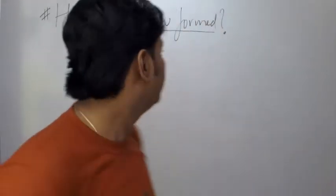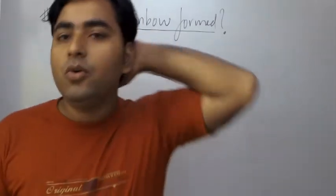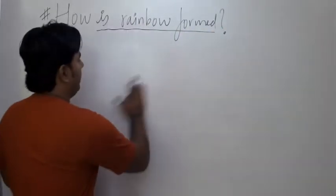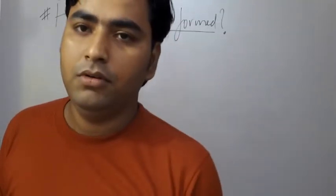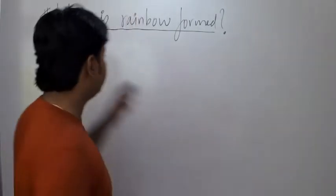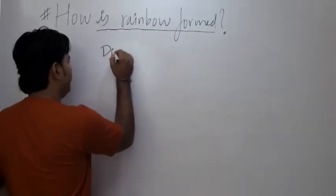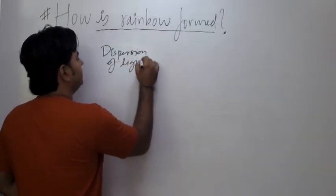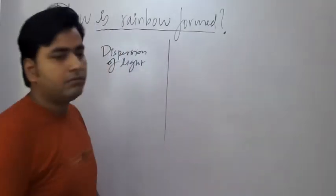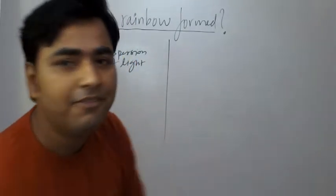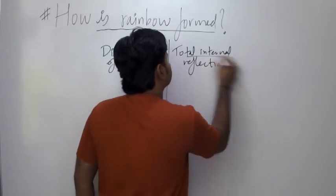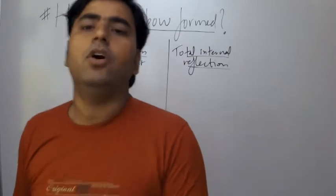Hello, today we are going to learn how a rainbow is formed — which phenomena are involved in its formation. Basically, there are two phenomena involved in the formation of a rainbow. We will learn both and then combine them. The first is dispersion of light, and the second is total internal reflection. These are the two phenomena involved in the formation of a rainbow.